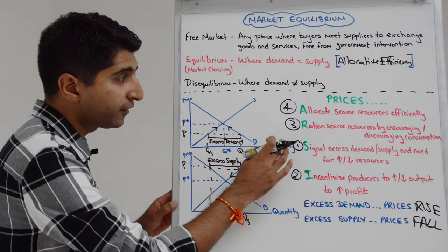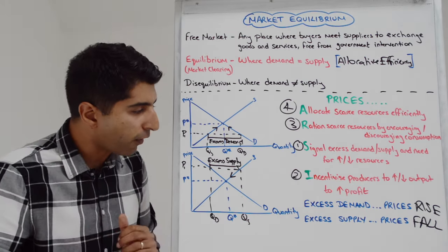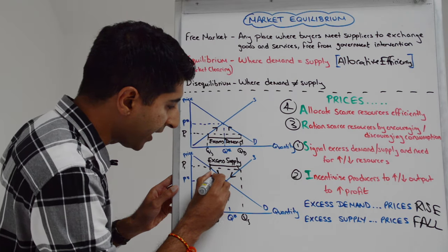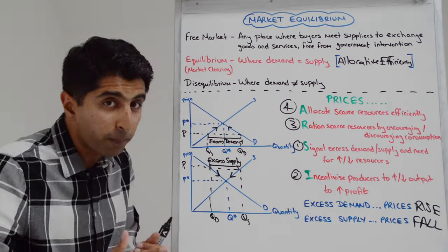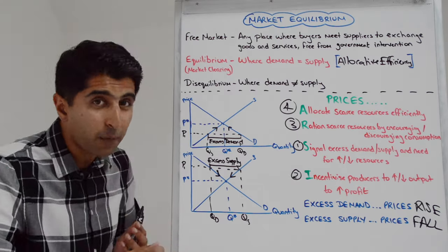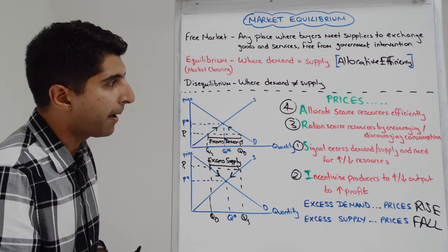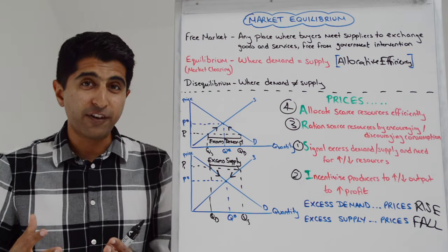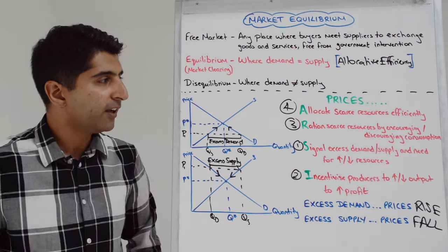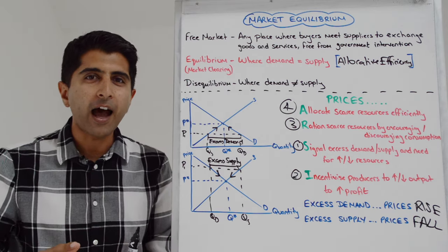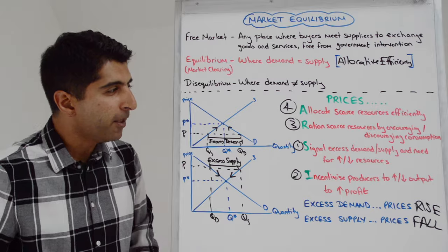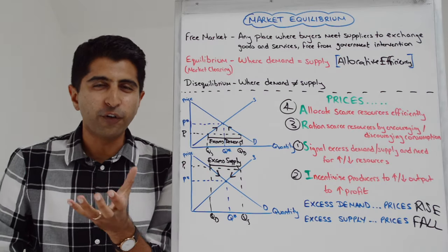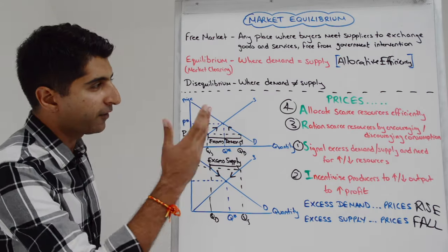But also lower prices ration scarce resources. In this case, by encouraging consumption, we can see that via an expansion along the demand curve. Lo and behold, put those two effects together, we get Q star, which is at equilibrium. And then bam, we end up at allocative efficiency. We're at equilibrium. Perfect. So that, guys, is not just what free markets are, but how free markets work in always attaining equilibrium. You've understood these special forces, special functions of the price mechanism.